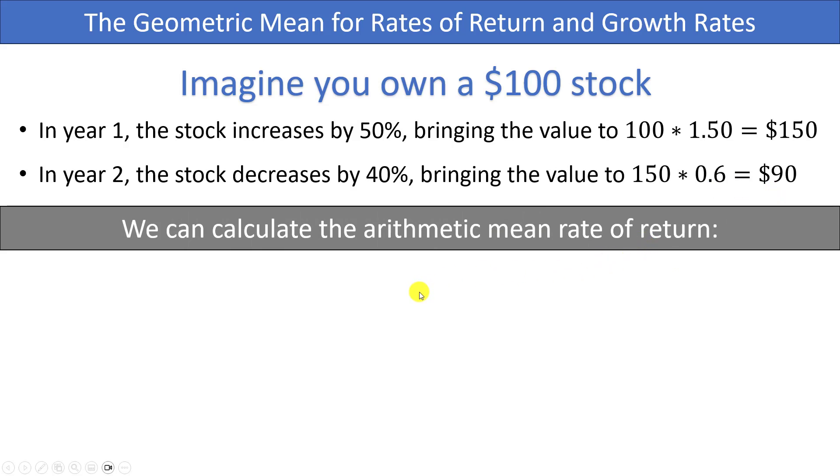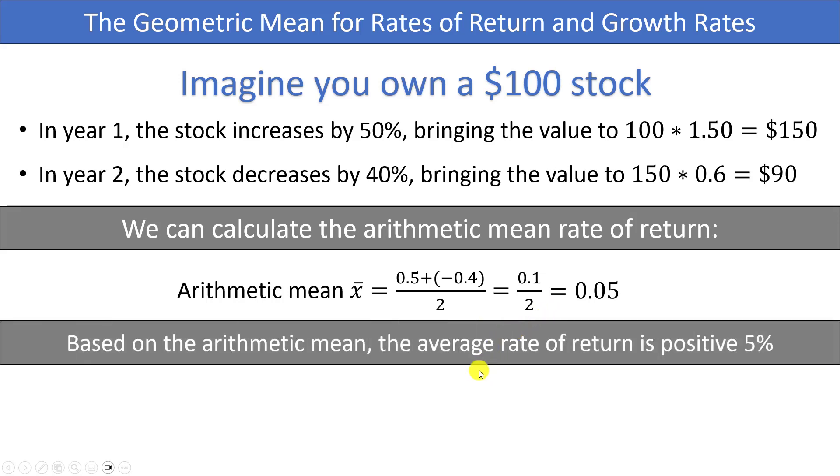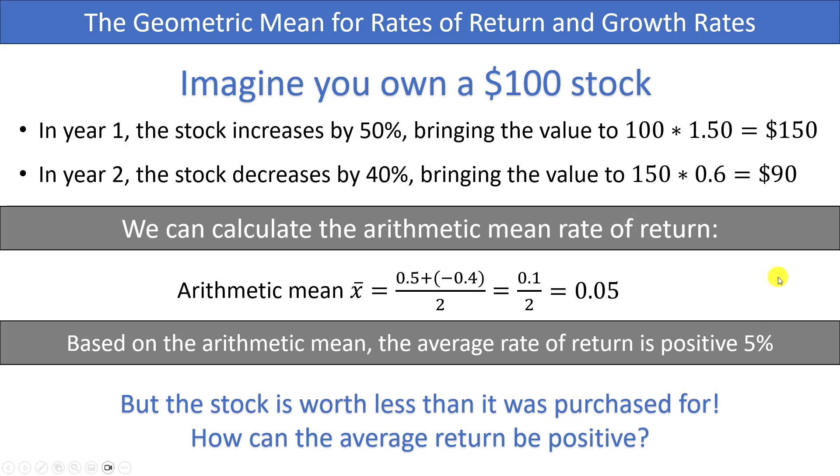So if you were to calculate the arithmetic mean rate of return then you would just be adding up those two returns which are 50% and -40%, or adding 50 and negative 0.4 and dividing by 2. You would get positive 0.1 divided by 2 which is 0.05. So based on the arithmetic mean we would be saying that the average rate of return is positive 5%, but the stock is worth less than what it was purchased for. We bought this thing for $100 and now it's worth only $90, so how could the average return be positive? Clearly something has gone wrong here.